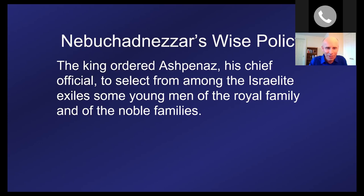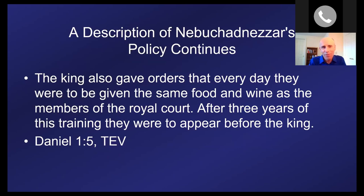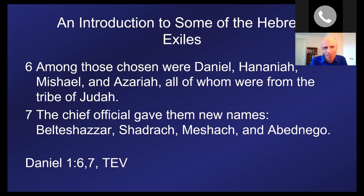King Nebuchadnezzar instructed his chief official Ashpenaz to select from the Israelite exiles young men of the royal family — handsome, well-trained, quick to learn, with high aptitude. Nebuchadnezzar had an amazing policy: he would take captives from royal lines of conquered countries and train them to be puppet rulers. Daniel and three of his friends were among that number. The king ordered that every day these individuals were to be given the finest food and beverages from the royal court.